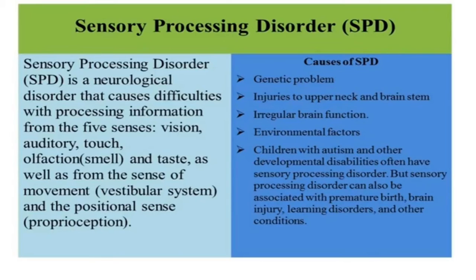Now we will see SPD. SPD means Sensory Processing Disorder. It is a condition in which the brain has difficulties receiving and responding to information that comes in through the senses. It refers to the way the nervous system receives messages from the senses and turns them into appropriate motor and behavioral responses. It is a sort of neurological traffic jam that prevents certain parts of the brain from receiving information required to interpret sensory information accurately.